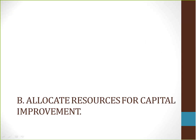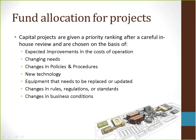Next, we will be looking at allocating resources for capital improvement. Capital projects are given a priority ranking after a careful in-house review and are chosen on the basis of expected improvements in the cost of operation, changing needs, changes in policies and procedures, new technologies, equipment that needs to be replaced or updated, changes in rules, regulations, or standards from governmental or standards organizations, and changes in business conditions. The Board of Directors deals with major issues arising from the in-house review and makes any final choices before approving the capital budget.